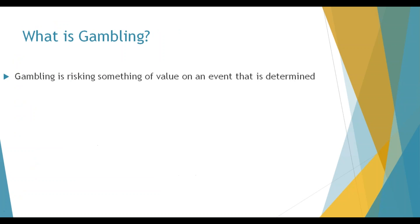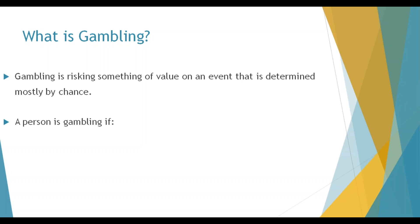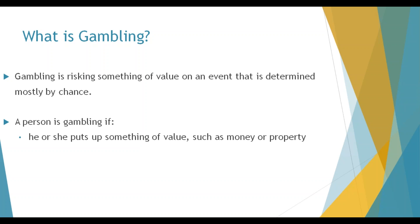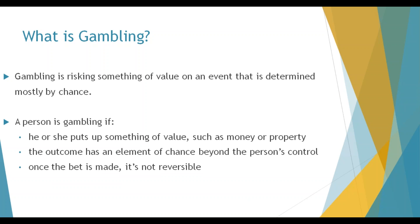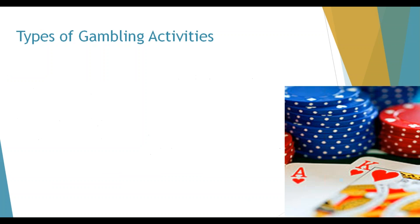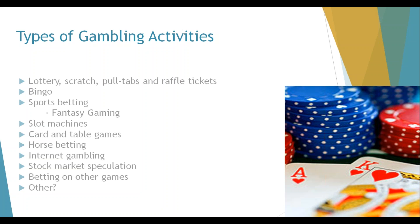What is gambling? Gambling is risking something of value on an event determined mostly by chance. A person is gambling if they put up something of value such as money or property, the outcome has an element of chance beyond their control, and once the bet is made, it is not reversible.